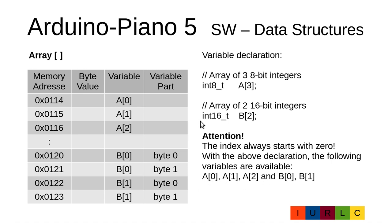With the declaration int16_t B[2] semicolon, you will get two 16-bit integer variables starting with index 0: B[0] and B[1]. It is important to know that the first element is always the 0 element. This has the consequence that the last element, here A[2], is 1 below the number of elements declared.